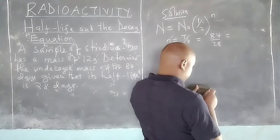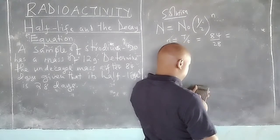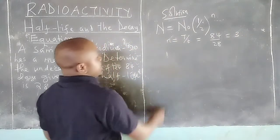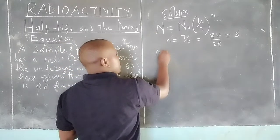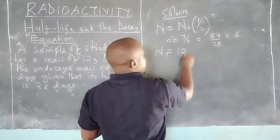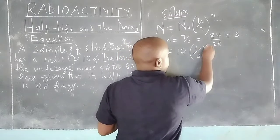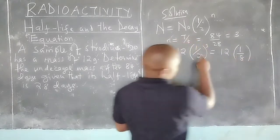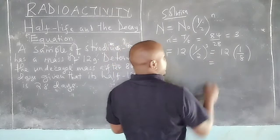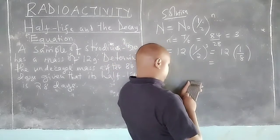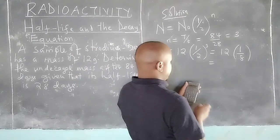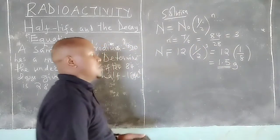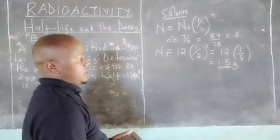Therefore, n is 3. So the remaining mass is the original mass multiplied by (1/2)³. This will be 12 times 1/8, because when we raise half to 3 we get 1/8. Therefore, 12 times 1/8 gives us 1.5 grams. The remaining mass will be 1.5 grams.